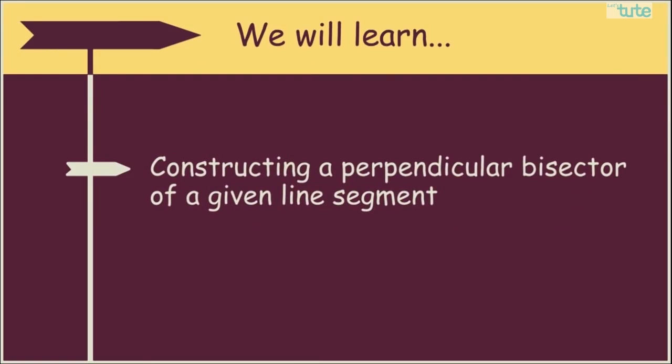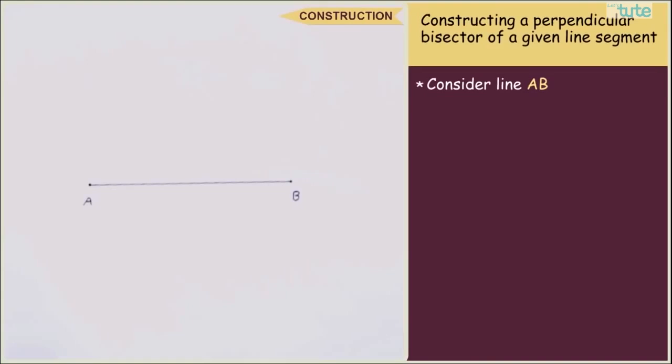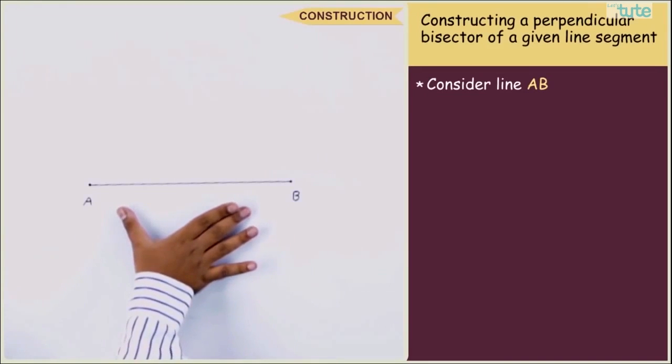How to construct a perpendicular bisector of a given line segment? Consider a given line segment AB.